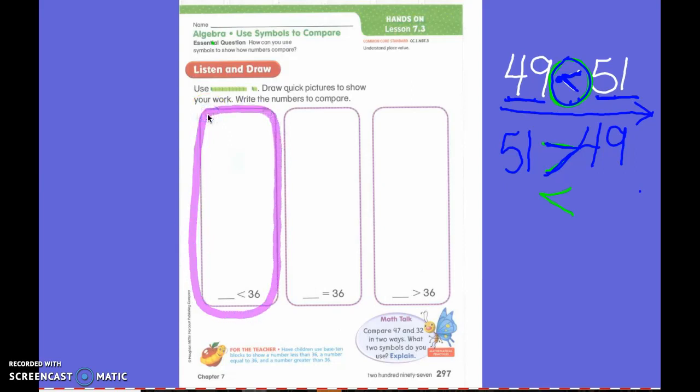I want you to write a quick draw of a number that is less than 36. And, I want you to write the number right here. The number that you quick drew, I want you to write down there.